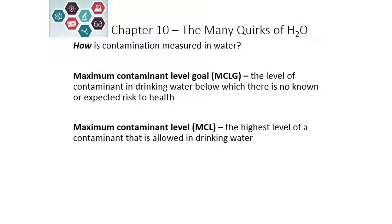Drinking water is essential to our everyday lives, and understanding concentrations — particularly small values like parts per million and parts per billion — helps us understand pollutants and other types of contaminants that can be in our drinking water. There are two levels that we're going to talk about.